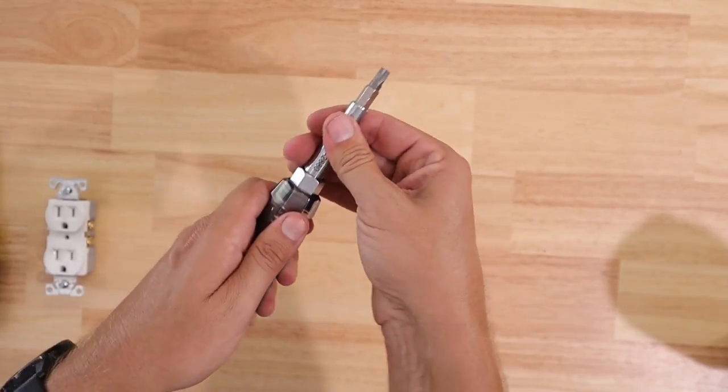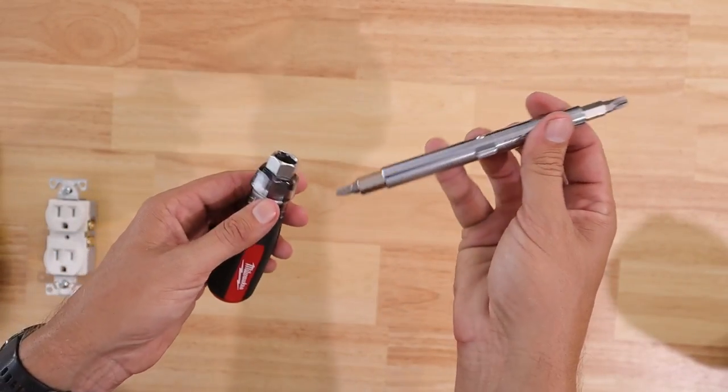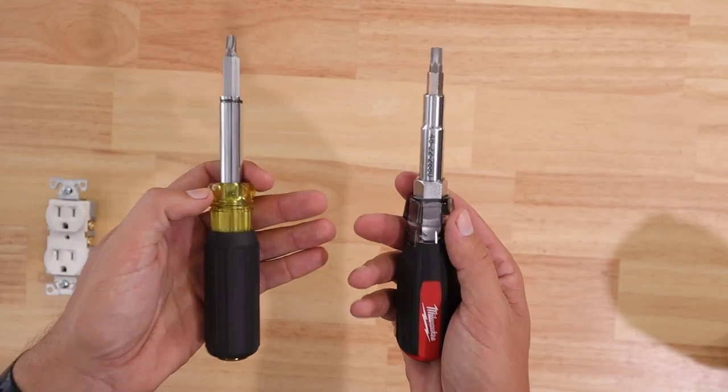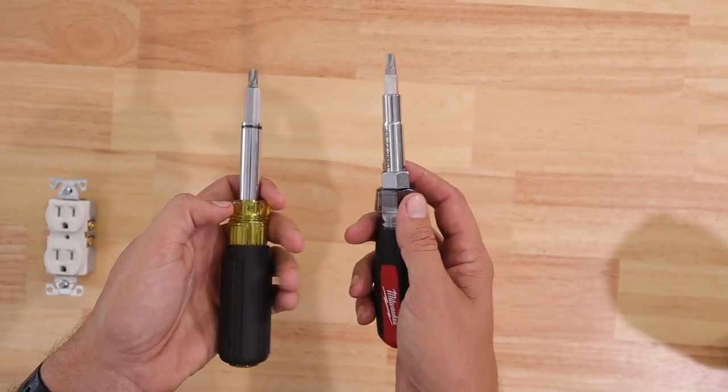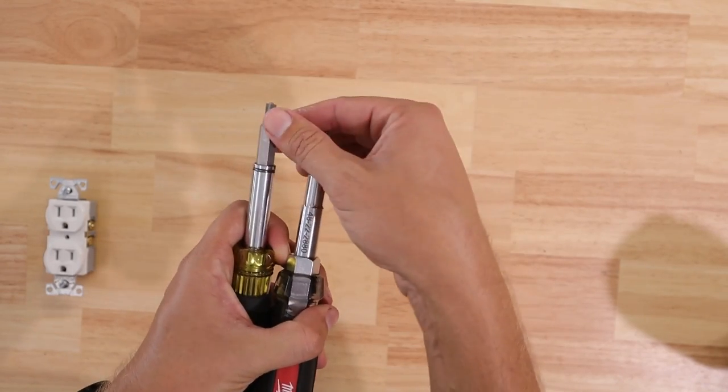And like the Klein, the Milwaukee is a multi bit. So that's nice so that you have everything at your disposal. And you don't have to buy the whole screwdriver. If you have one of these screwdrivers or one like it, you can just buy the bits and for the most part, it's plug and play.